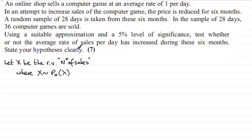Now we've got to state our hypothesis clearly here. For my null hypothesis, if nothing has changed—we're looking at 28 days—we'd expect to have a mean number of sales of 28. So the null hypothesis: lambda is going to be equal to 28. But we're told that 36 computer games are sold, and because this is more than our mean, we're wanting to test to see whether or not the number of sales has increased. In other words, the alternative hypothesis is that the mean has increased, so it's greater than 28.